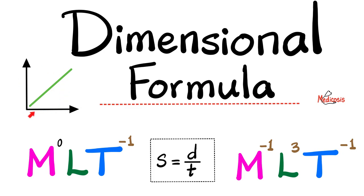In previous videos we talked about how to read graphs in physics, how to find the slope, and the meaning of the slope. Then we talked about measuring units, scalars versus vectors, distance versus displacement, speed versus velocity, mass versus weight, acceleration, work, torque, force, pressure, mechanical advantage, thermal physics and thermodynamics, oscillatory motion, wave motion and the types of waves — mechanical waves and electromagnetic waves, sound waves and light waves.